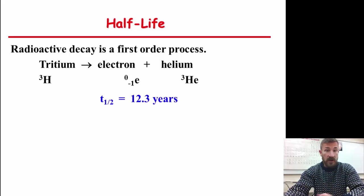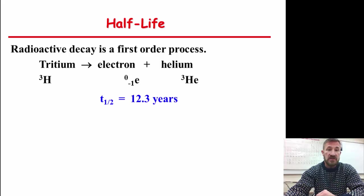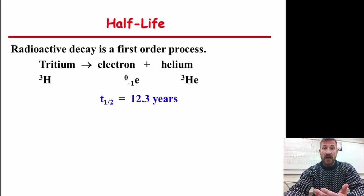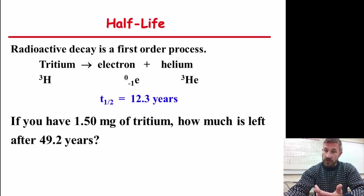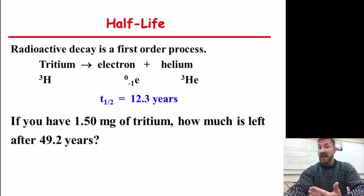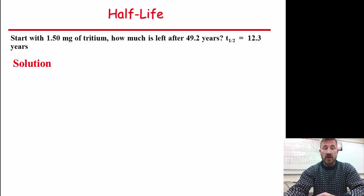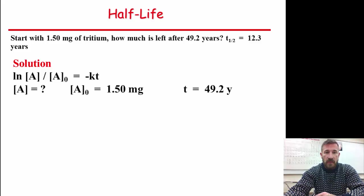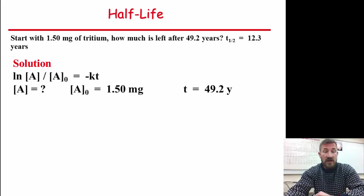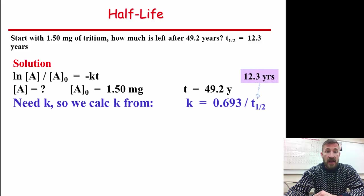Radioactive decay is always a first-order process. And for example, this substance tritium, which is hydrogen-3, has a half-life of 12.3 years. So if you have 1.50 milligrams of tritium, how much is left after 49.2 years? So what you need to do is figure out, well, how many half-lives is that? So what you do is divide ln of the concentration of A over ln concentration of A₀ equals minus kT. So we know both those values. The initial concentration is 0.15 milligrams, the initial amount. We know the time. Or we can calculate the rate constant because we know the half-life.